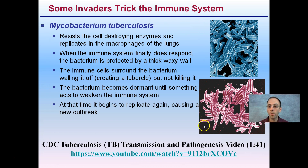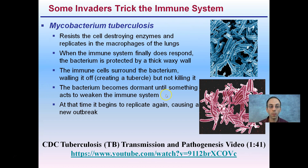Here are examples of what it looks like. The immune cells surround the bacterium, walling it off and creating this structure called a tubercula — but they do not kill it. That's a key part: the bacterium is contained but not destroyed.